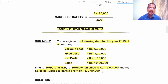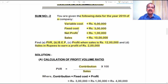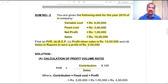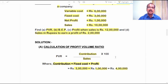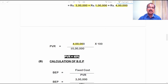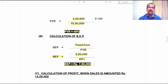These are the 4 items we need to find out as per sum number 2. The formula for profit volume ratio is contribution divided by sales into 100. Sales is 10 lakh rupees given in the problem. By adding fixed cost with profit we can find contribution: 3 lakh rupees plus 1 lakh rupees gives 4 lakh rupees of contribution. So PVR is 4 lakh divided by 10 lakhs into 100, which gives 40%. For BEP, the formula is fixed cost divided by PVR: 3 lakh divided by 40% gives a breakeven point of 7 lakh 50 thousand rupees.